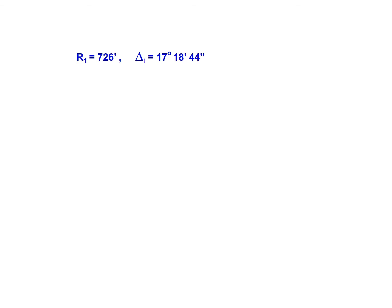So we have R1 equal to 726 feet, delta 1 is 17 degrees, 18 minutes, 44 seconds. Again, this is our terminology for compound curves. R2 will then be 465 feet. Delta 2 is 10 degrees, 14 minutes, 28 seconds. And our total intersecting angle delta 1 plus delta 2 is going to be 27 degrees, 33 minutes, 13 seconds.